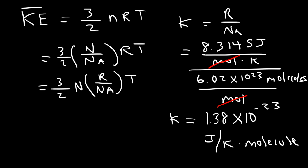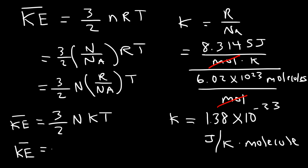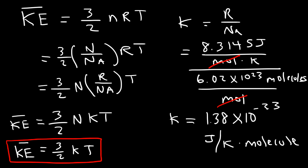So that's the value of Boltzmann's constant. Replacing R over Nₐ with k gives us the equation: the average translational kinetic energy is 3 over 2 NkT. If you want to find the average kinetic energy for one gas molecule where N is 1, that gives you the per-molecule equation. But if you have multiple gas molecules, this gives you the total kinetic energy for many gas molecules.